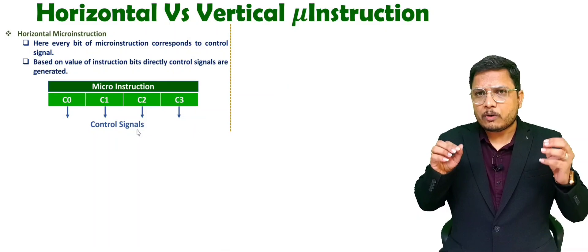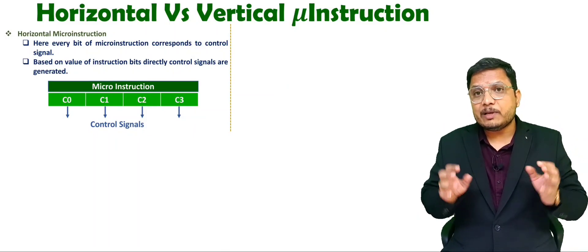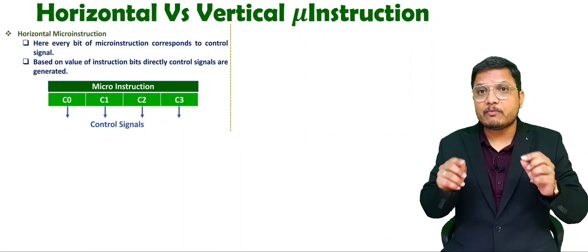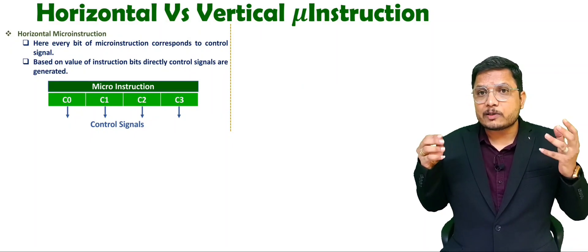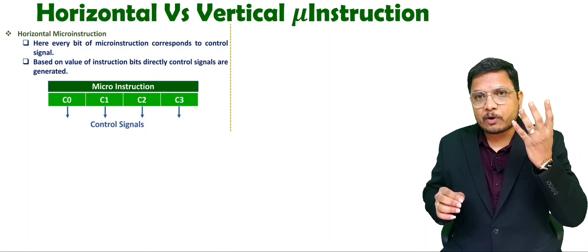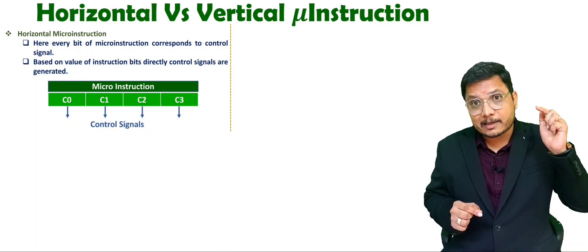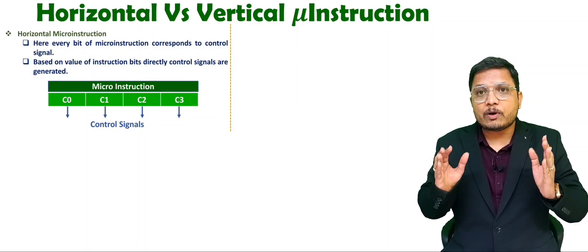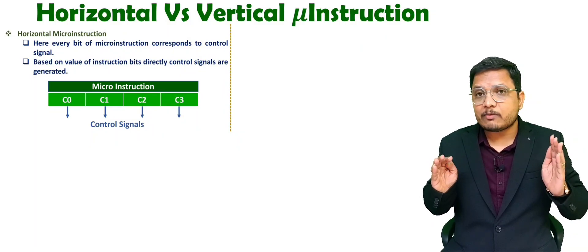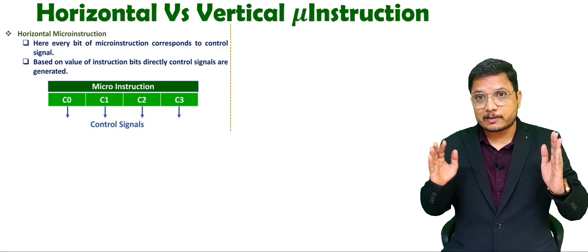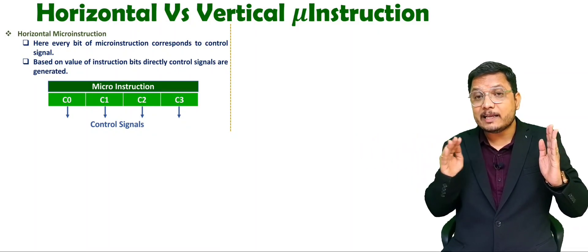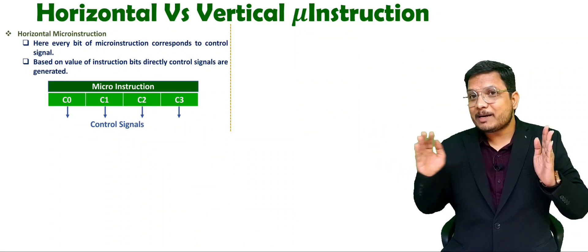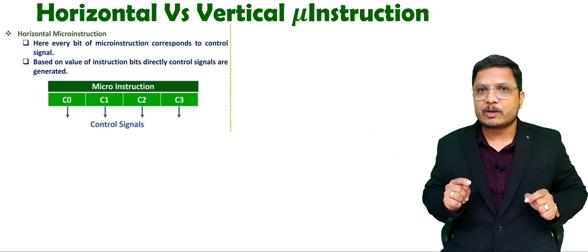To perform any micro operation, the CPU has to generate control signals. In horizontal micro instruction, you have one control word, and that control word defines control signals directly. If a four-bit control word is there, then it will generate four control signals at the same time. Why is it referred to as horizontal micro instruction? Because if you want to generate more control signals, you need to expand the memory horizontally. That is why it is called horizontal micro instruction.